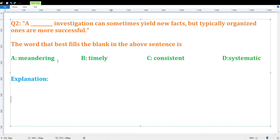Meandering: moving in an undirectional way without proper direction. Timely: doing in time or given time.